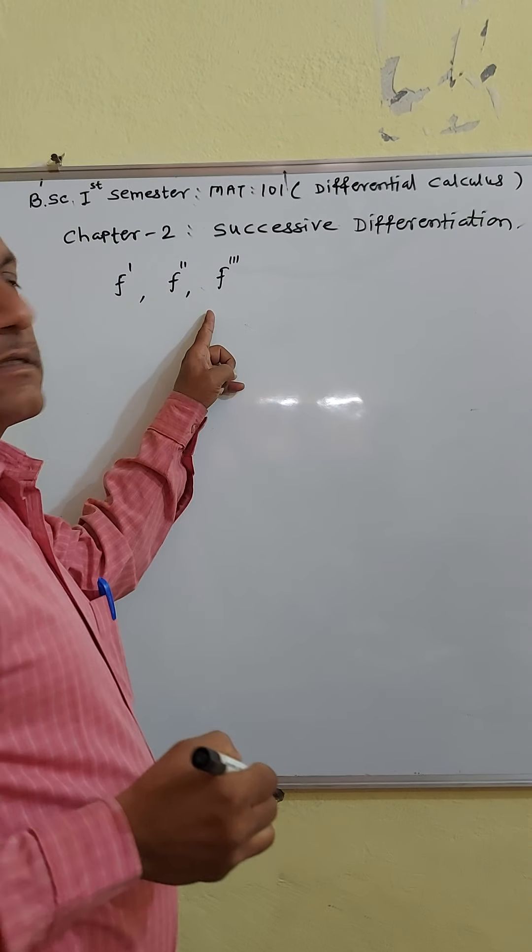Now we see some examples. Example number 1: if x is equal to a into cos theta plus theta sin theta, and y is equal to a into sin theta minus theta into cos theta, then find d2y by dx squared.